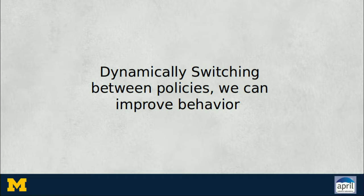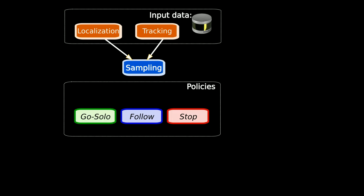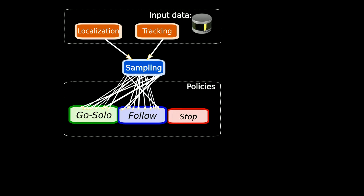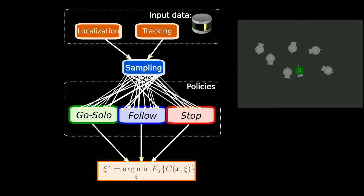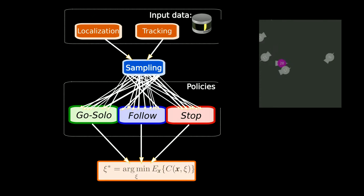Multipolicy decision-making dynamically switches from amongst a set of policies — in this case, going solo, stopping, and following another agent. The expected utility of each policy is estimated through thought experiments, or forward propagations of the inferred state of the environment.